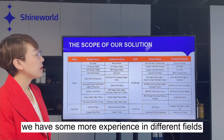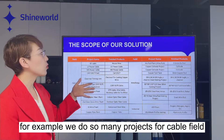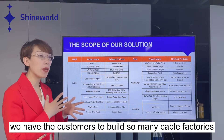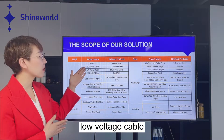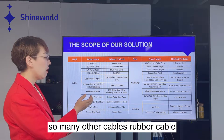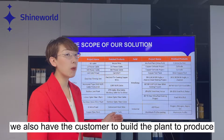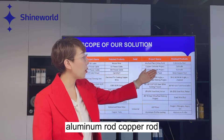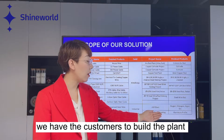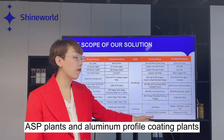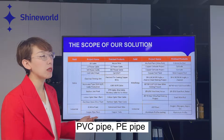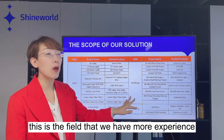We have extensive experience in different fields. For example, we have done so many projects in the cable field — we have helped customers build cable factories producing BV cable, low-voltage cables, network cables, CAT cables, rubber cable, fiber cable. We also help customers build plants to produce aluminum rod, copper rod, and steel rod. Additionally, we help customers set up ASP plants, aluminum profile coating plants, and pipe plants including copper pipe, PVC pipe, and PE pipe.